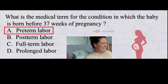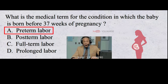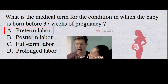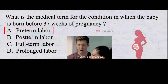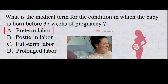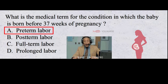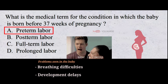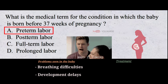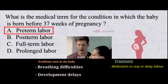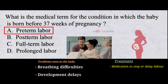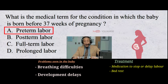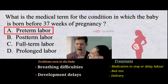Preterm labor is when a woman goes into labor before 37 weeks of pregnancy. Preterm labor can be difficult to stop once it has started, and it can increase the risk of health problems for the baby, such as breathing difficulties and developmental delays. Treatment may include medication to stop or delay labor, bed rest, or delivery of the baby if necessary to protect their health.